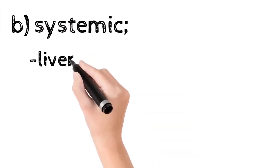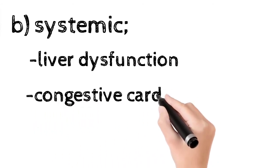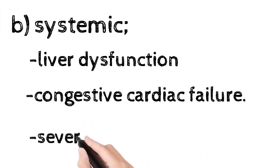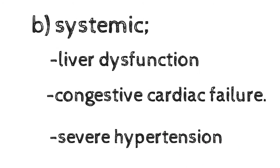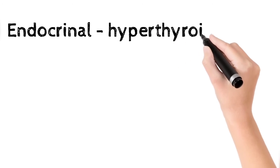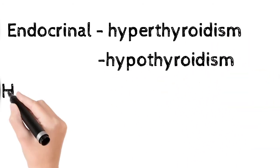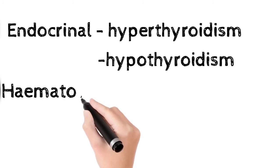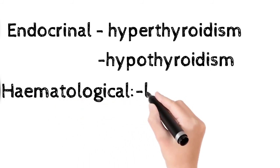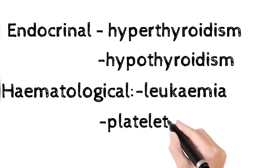The second one is systemic causes. Into this, there is liver dysfunction, congestive cardiac failure, and severe hypertension. Also, the endocrinal causes: hypothyroidism and hyperthyroidism. And the hematological causes: leukemia and platelet deficiency, etc.